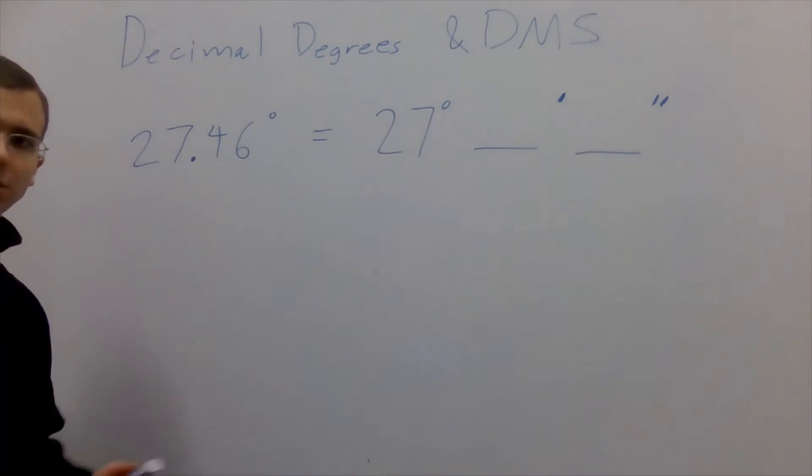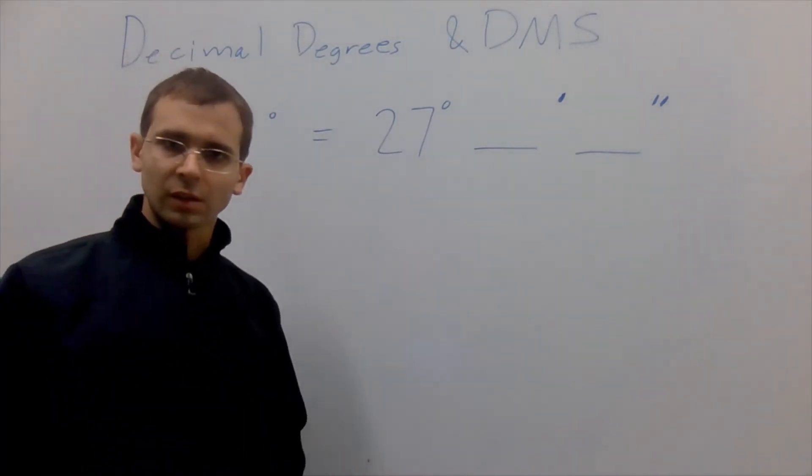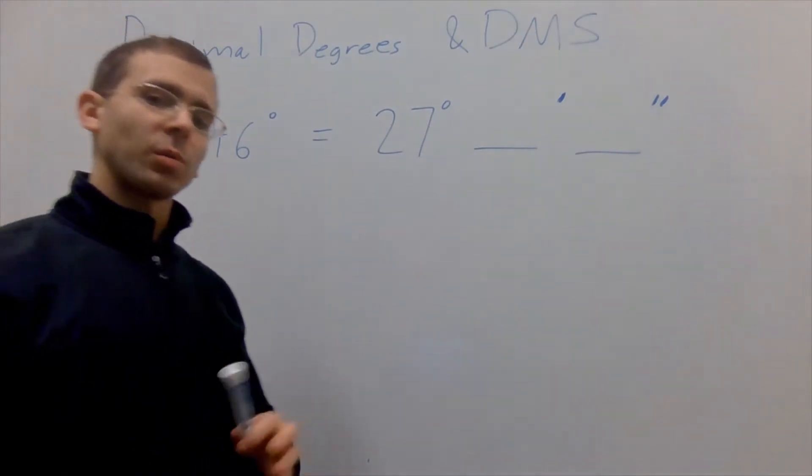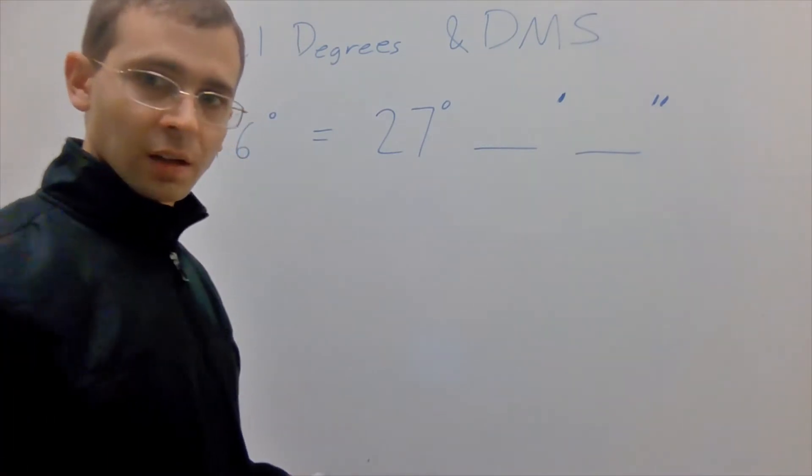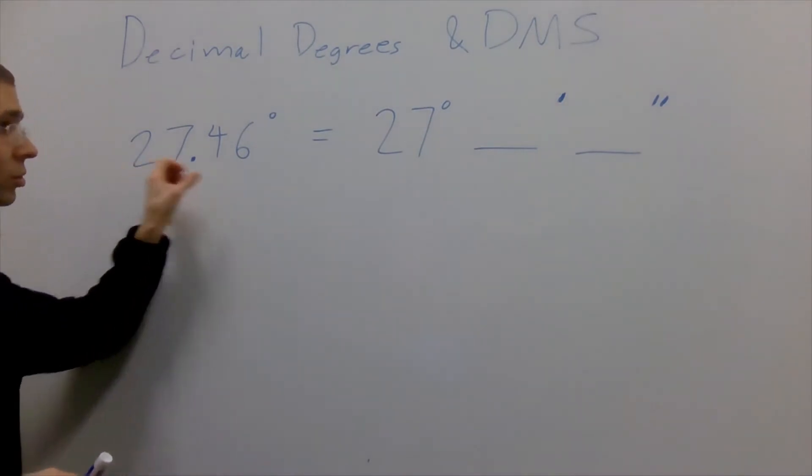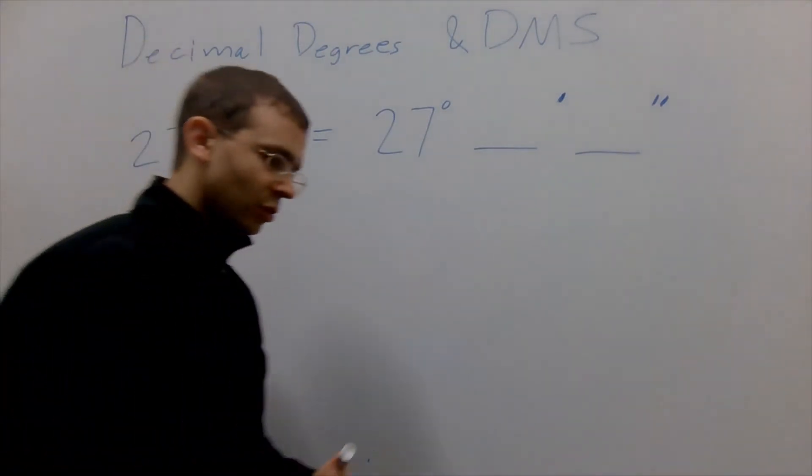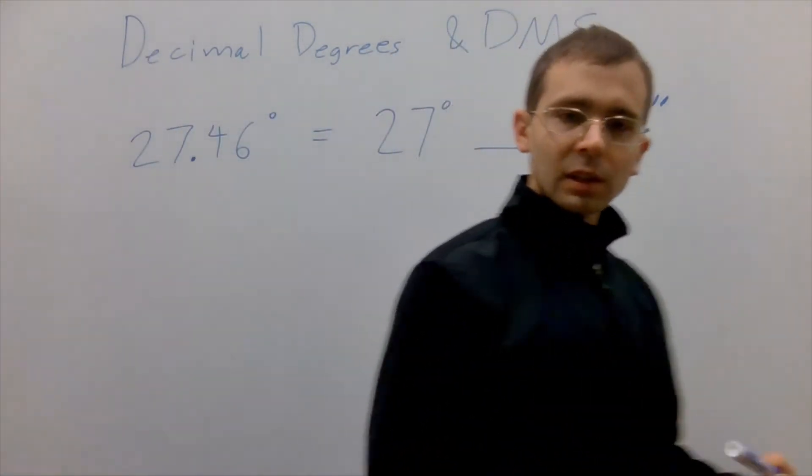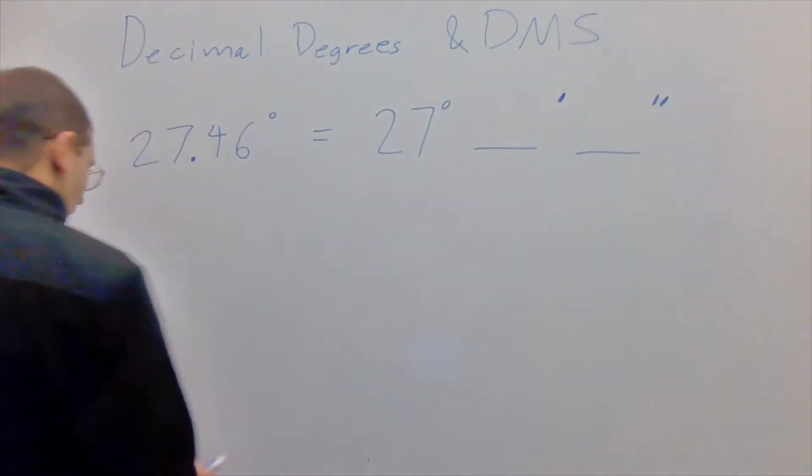Let's say we wanted to express this 27.46 degrees in degrees minutes seconds. Let's do this the long way once so we can appreciate the value of our degrees minutes seconds function in our calculator. What we're dealing with here is 27 degrees, and then 46 one-hundredths of a degree. We need to figure out how many minutes that is and then how many seconds after that.